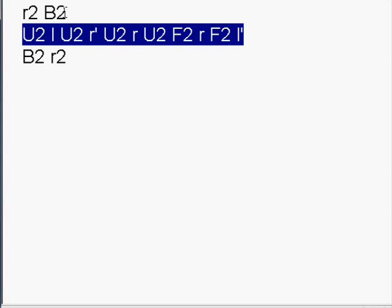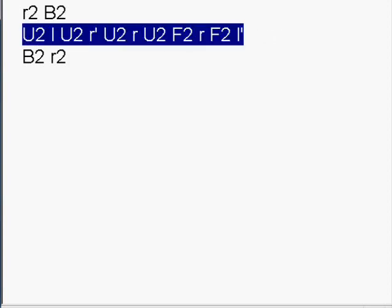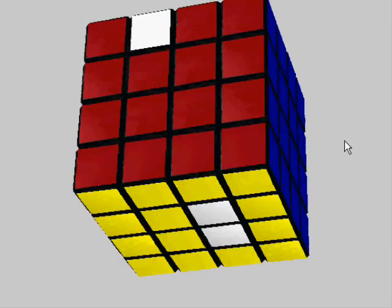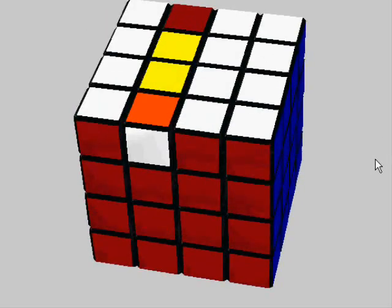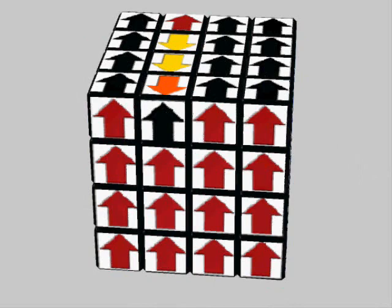If we omit the setup moves R2B2 and B2R2 and apply the remainder, we get the following result: the centers are messed up, and these two individual edge cubies are not swapped within the same composite edge — they're swapped oppositely. So those setup moves position the two wing edges and the two centers so that it becomes a pure algorithm.